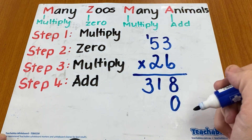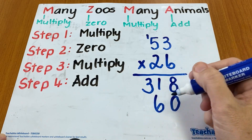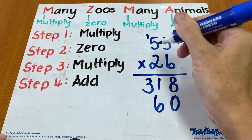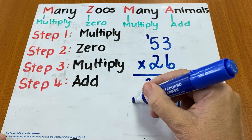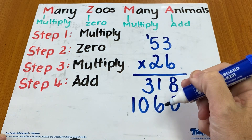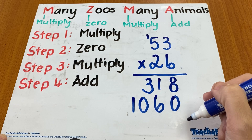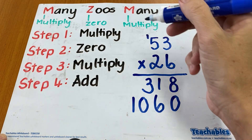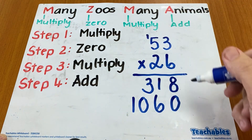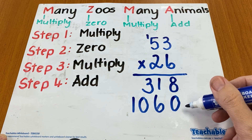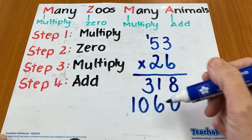So three times two is six. Five times two is ten — and that is now step three. So we've done step one where we multiplied, then we've added the zero which is step two, and step three we have multiplied again.